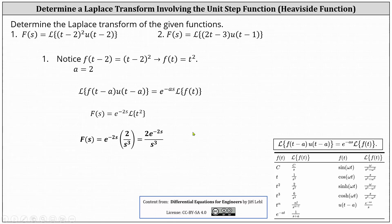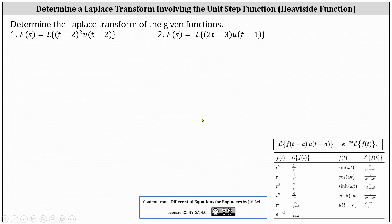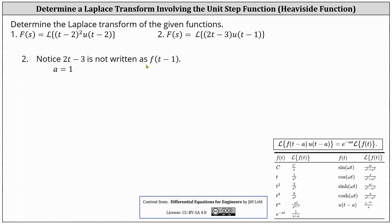Now let's look at the second example, which isn't quite as straightforward. Analyzing number two, notice a is equal to one because of u of the quantity t minus one. But the function two t minus three is not written in the form of f of the quantity t minus one, so we can't easily determine f of t. Therefore, we'll perform a change of variables.